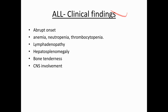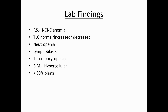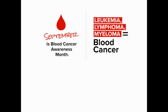For revision: clinical features of leukemia include abrupt onset, anemia, decreased hemoglobin, neutropenia, thrombocytopenia, decreased platelets, organomegaly, bony tenderness, and sinus involvement in lymphoblastic leukemia. Lab findings: normocytic normochromic anemia on peripheral smear; TLC may be normal, increased, or decreased as explained in sub-leukemic and aleukemic variants. Platelets always decreased in acute leukemia. Bone marrow is always hypercellular with more than 30% blasts according to FAB classification.